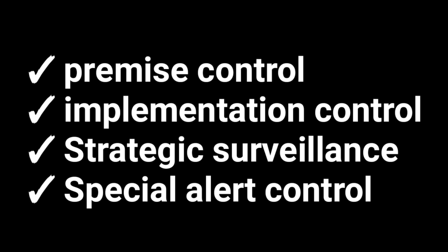Another type of strategic control is strategic surveillance. This is general — it combines both premise control and implementation control. Its aim is to monitor a wide range of events, both outside and inside the organization, that are likely to affect the organizational strategy.